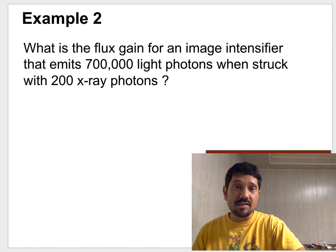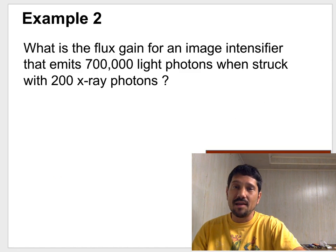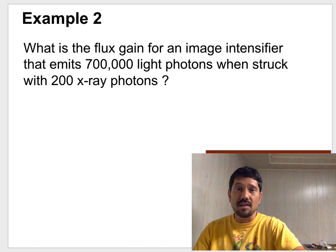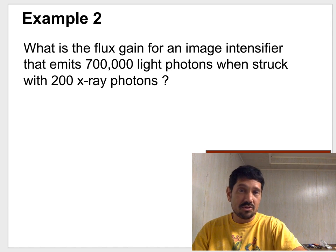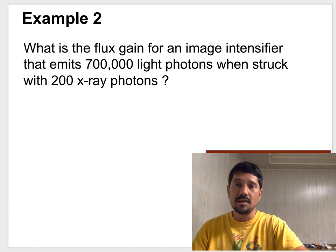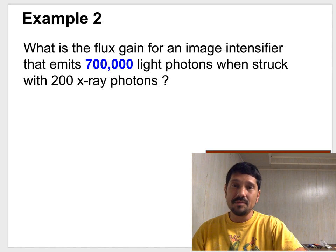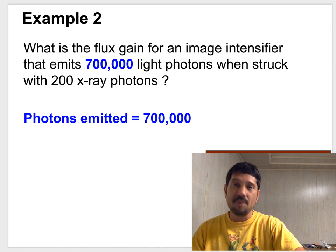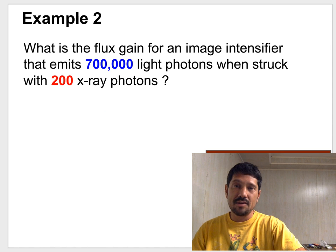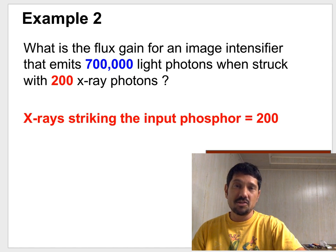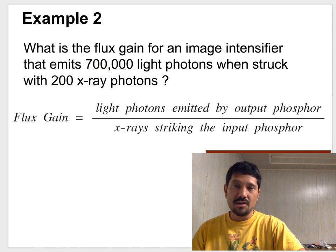So here's an example. What's the flux gain for an II that emits 700,000 light photons when struck with 200 X-ray photons? Well our first step is, remember our formula. Next we see there's 700,000 photons emitted. And there is 200 X-rays striking the input phosphor.